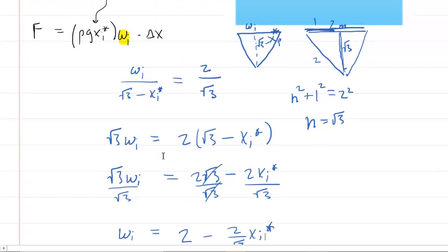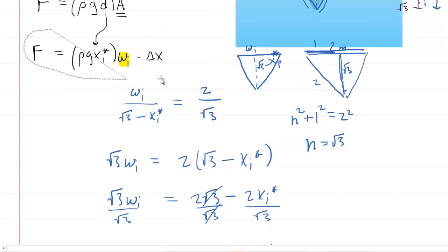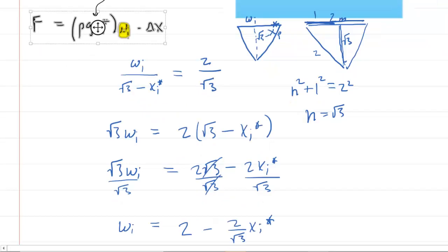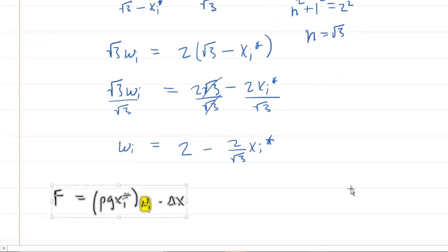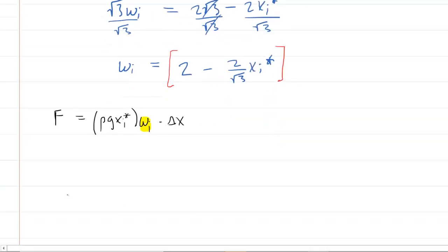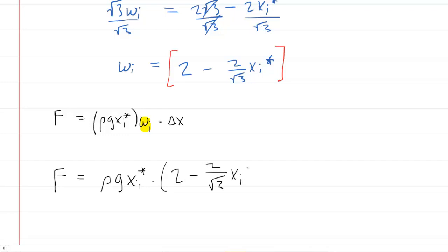So that's the expression we want. Going back to our force equation for the thin rectangular strip, we substitute in this expression for W sub i. The force on our thin rectangular strip equals the density of the fluid times g times x sub i star, multiplied by (2 minus 2 over radical 3 times x sub i star), times delta x.